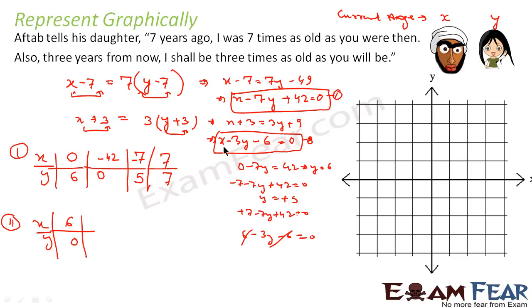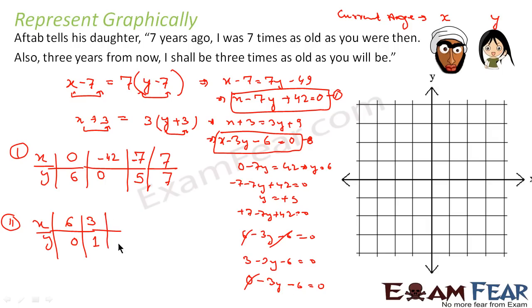Putting x = 3 in equation 2: 3 minus 3y minus 6 = 0, which gives y = minus 1. And putting x = 0: 0 minus 3y minus 6 = 0, which gives y = minus 2. So the three points for equation 2 are: (6, 0), (3, minus 1), and (0, minus 2).